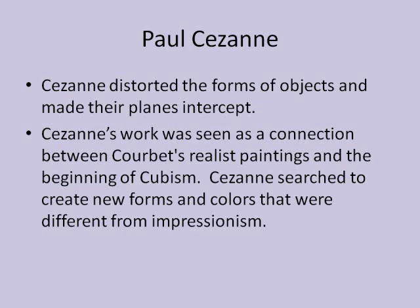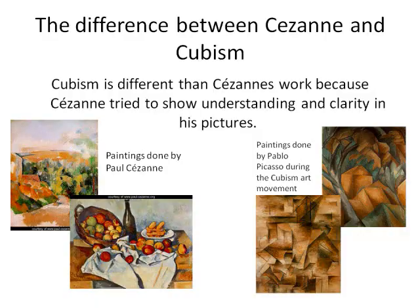The beginning of Cubism was influenced by a few artists. Picasso and other Cubist artists were influenced by Gustave Courbet and Paul Cézanne. Courbet influenced Cézanne, and Cézanne influenced Picasso and Braque. Paul Cézanne, from 1839 to 1906, painted in a form called profound realism and painted solid objects and landscapes that influenced the beginning of Cubism. Cézanne also influenced Cubism in the way he distorted the forms of objects and made their planes intercept, and his geometric compositions led Braque to simplify his faceted forms.